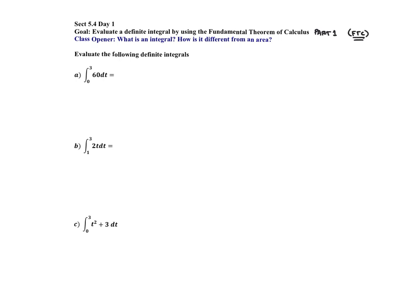Our next video will be on FTC Part Two. So let's evaluate the following definite integrals using geometric methods and get an exact value. Let's call this T and F of T. We're working with a definite integral with bounds 0 to 3. Our function F of T is a constant of 60, so the area is base times height: 3 times 60 equals 180.